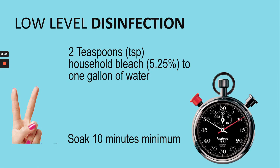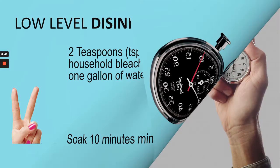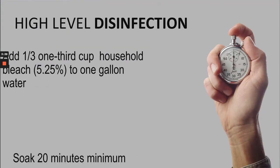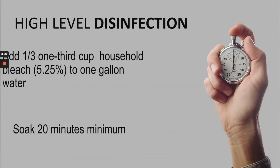Let's take a look at the bleach information, starting with low level disinfection: two teaspoons of household bleach added to one gallon of water, soak for 10 minutes. High level disinfection: add one third cup of household bleach to one gallon of water, soak for 20 minutes.